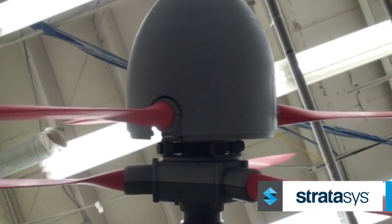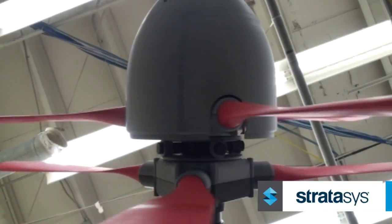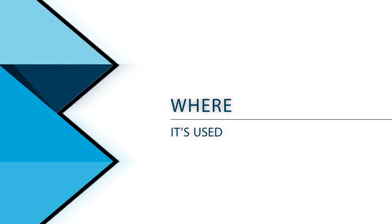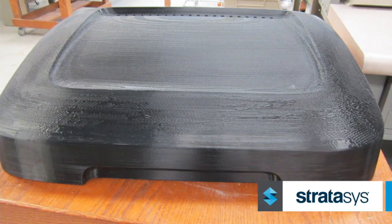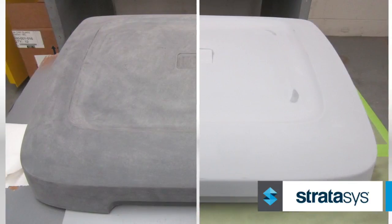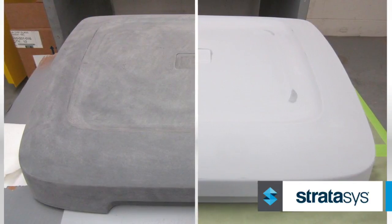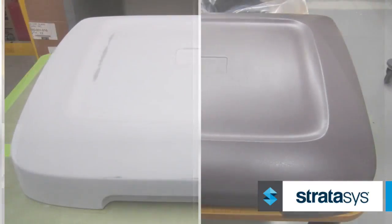Aerospace is an example of low-volume, high-value production, which is ideal for FDM. FDM is used for end-use parts throughout the entire product lifecycle. During the alpha and beta phases of product release, it can be used to make parts for pilot production runs.